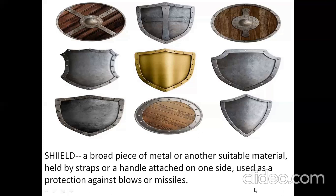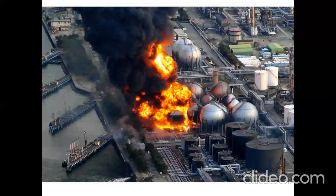Now let us see what happens if shielding is not adequately provided in a nuclear power plant. This image shows a nuclear power plant blast in which shielding was provided, but the adequate requirements of shielding were not fulfilled. That is why modern nuclear power plants are focusing much more on the quality of shielding that needs to be commissioned.